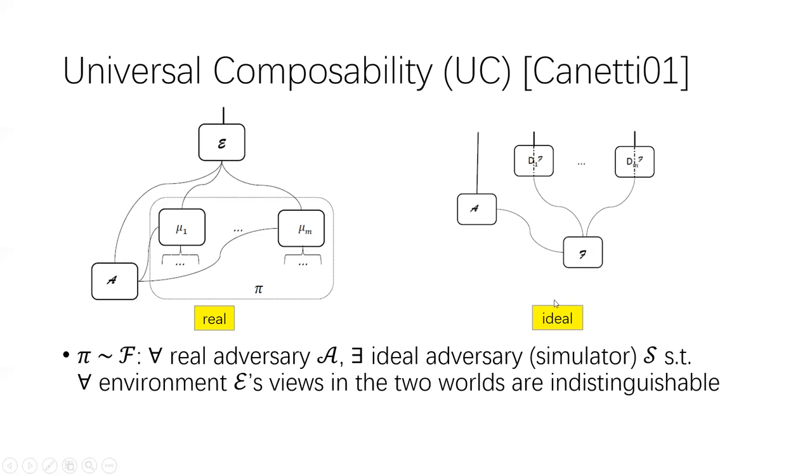On the right-hand side is the ideal world. The protocol in the ideal world can be any protocol, but usually the ideal protocol consists of a single ideal functionality F and M dummy parties denoted D1 to Dm. Now we say that the protocol Pi UC emulates the ideal functionality F if for any adversary in the real world, there is an adversary in the ideal world which simulates the environment's view.